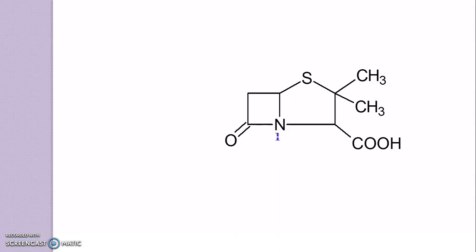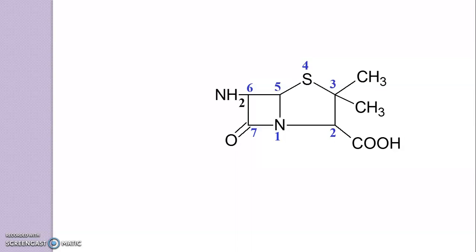You have to give the numbering. Here, the preference is given to nitrogen. So, number 1 is given to nitrogen. And accordingly, the sulfur has the 4th number. And to the 6th carbon, you have to attach an amino group. So, this formed structure is of 6-aminopenicillinic acid.